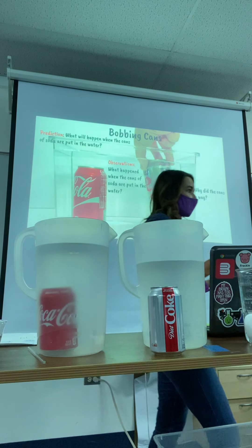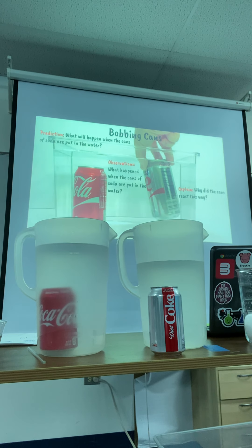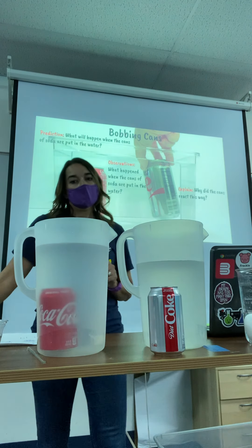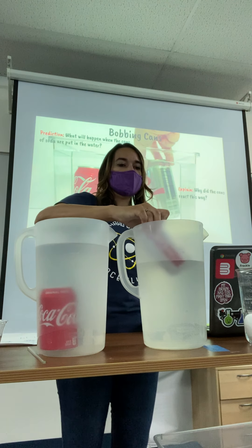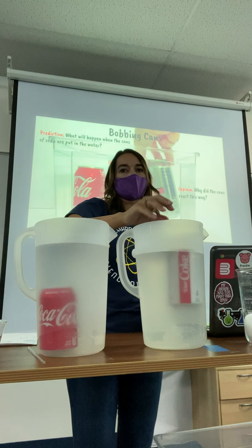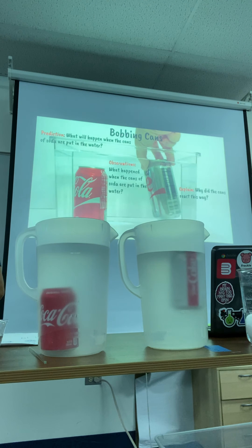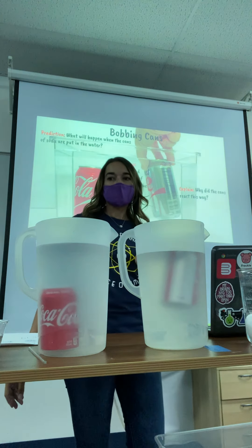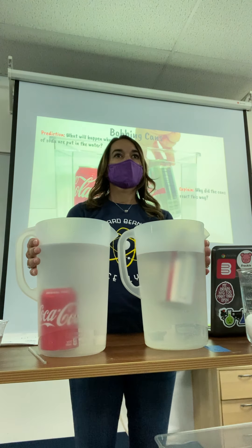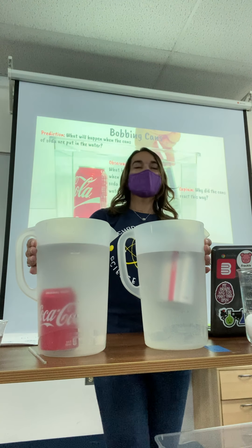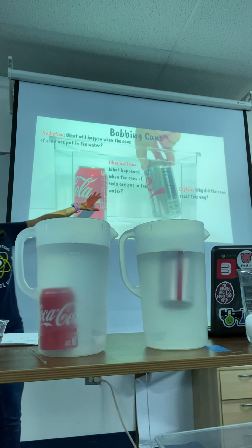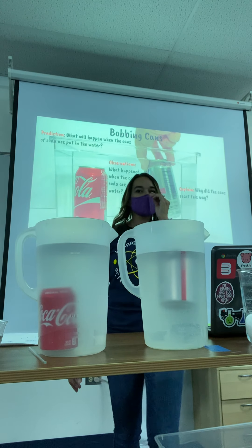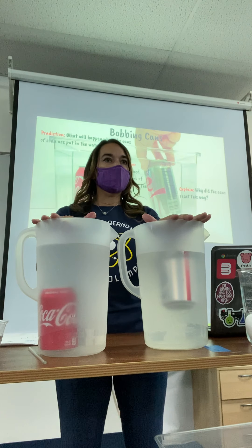Relating it to density — density of water is one gram per centimeter cubed. So our Coca-Cola would have a higher or less density? Diet Coke — here it goes. I'm going to try not to get air under the pan. The Diet Coke floats. So explain why the cans react this way. Why does the regular Coke sink and the Diet Coke float? Why does that happen?